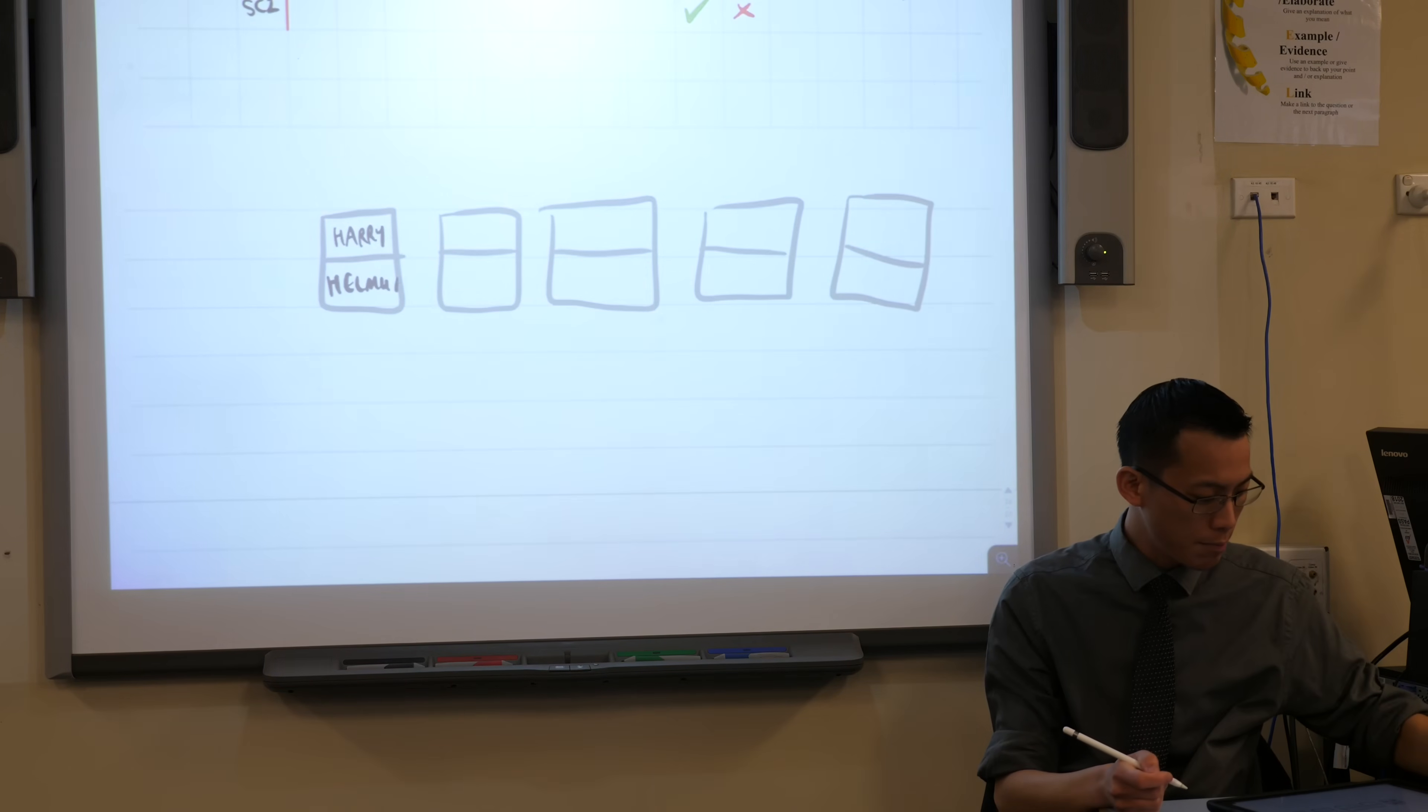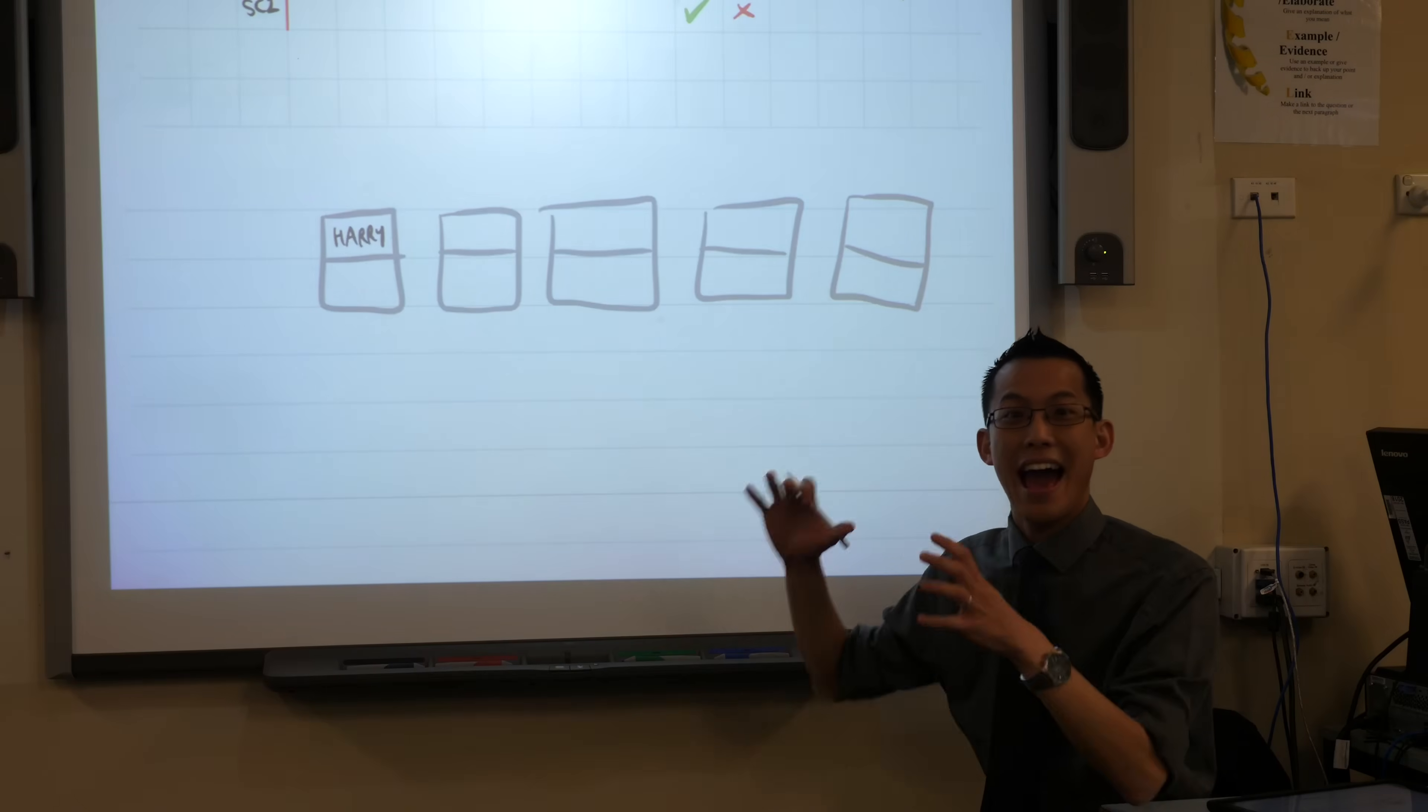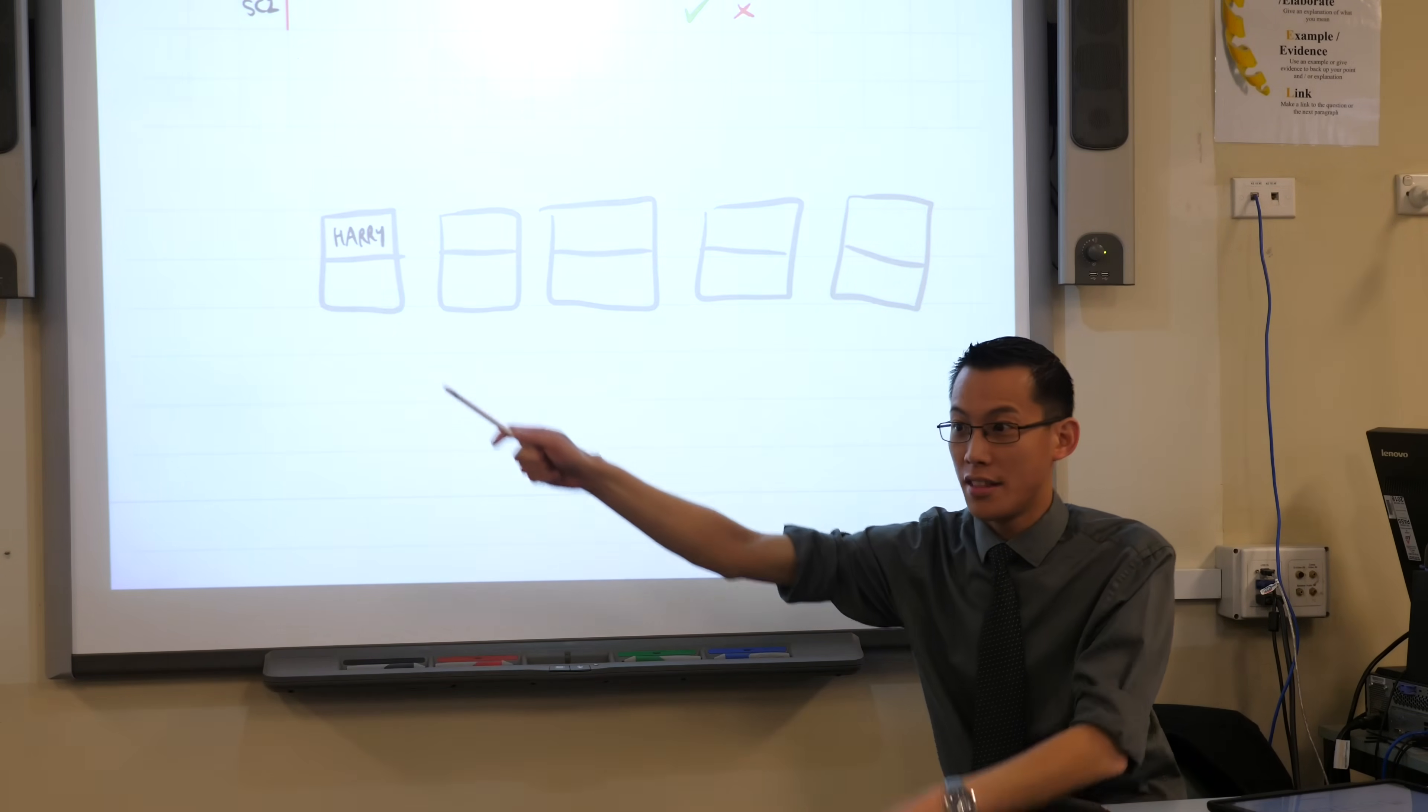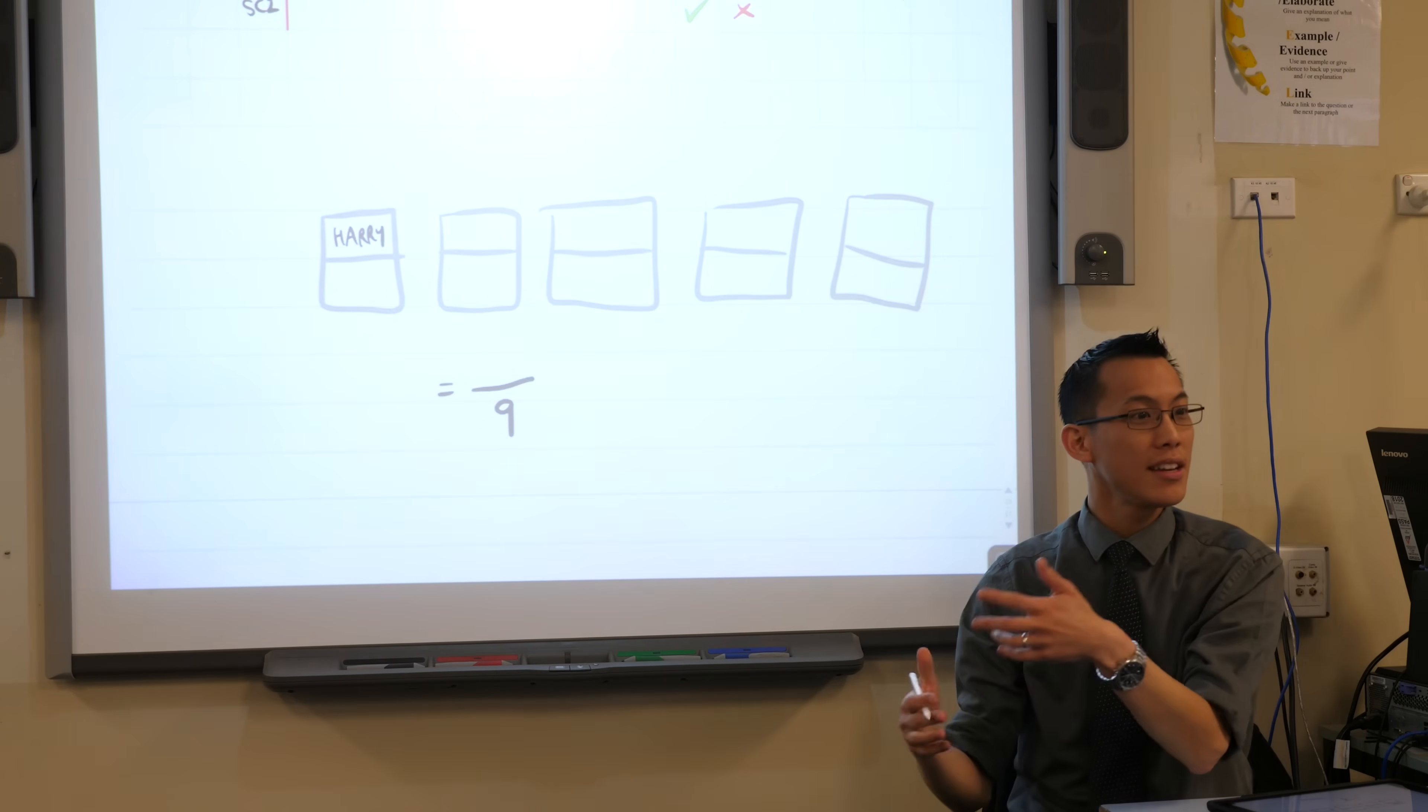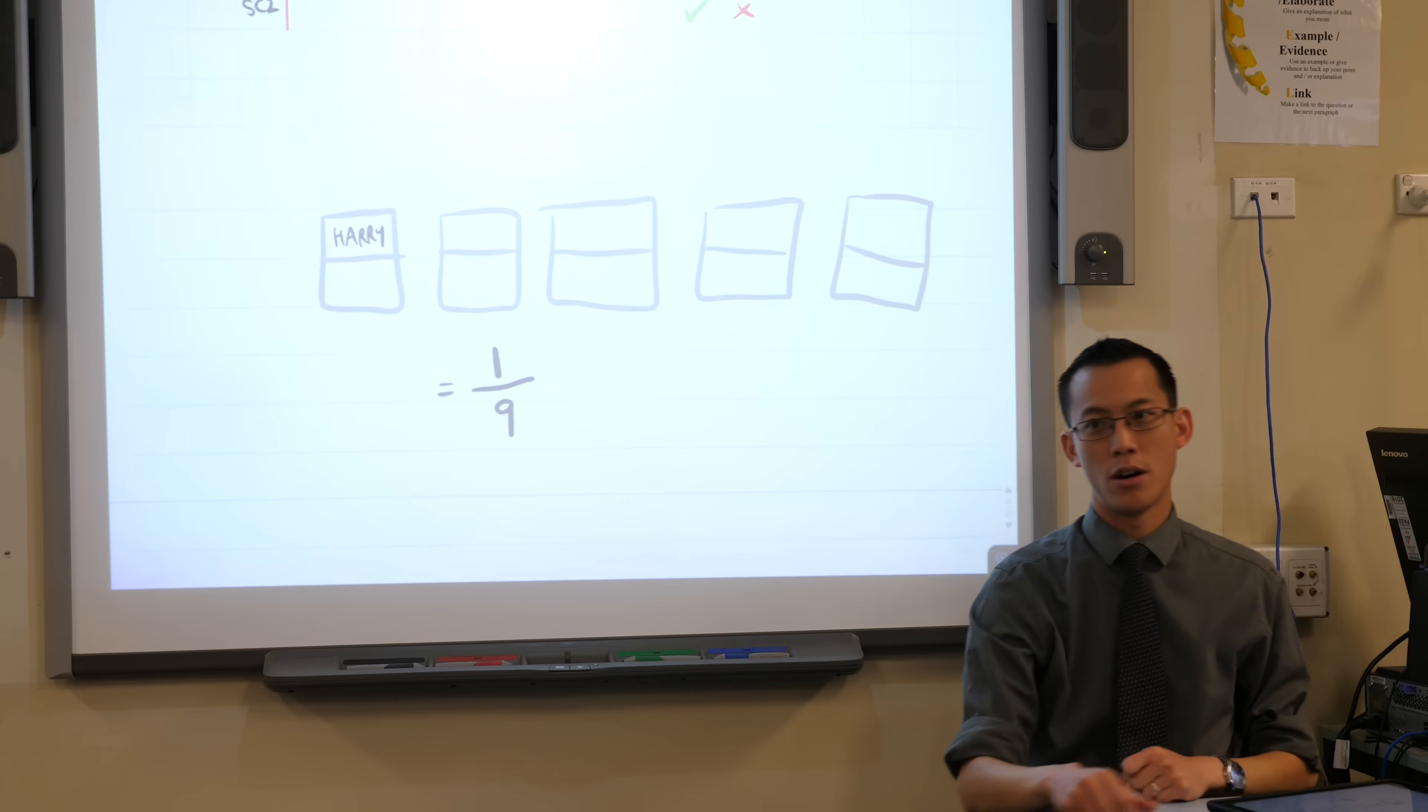But if I just rewind, before we wanted that situation, at this present time, how many different friends do I have to choose from to get the same card as Harry? There are nine friends left to choose from. In other words, the sample space is out of nine. How many of those friends are the favourable event? Only Helmut. Just the one.